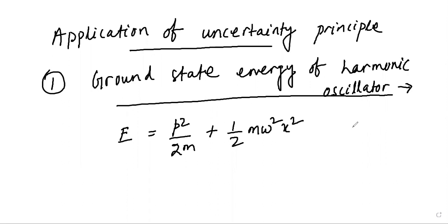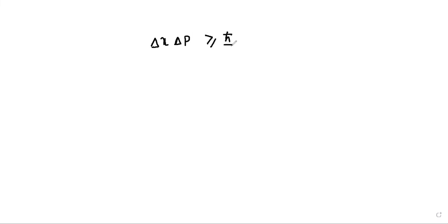In the ground state, the uncertainty in momentum Δp and the uncertainty in position Δx are of the order of their magnitudes. So we can take the maximum uncertainty in momentum to be p, and the maximum uncertainty in position to be x. We then use Heisenberg's uncertainty principle: ΔxΔp ≥ ℏ/2.